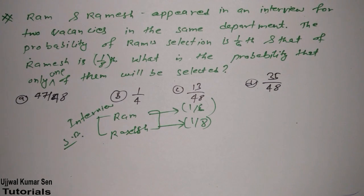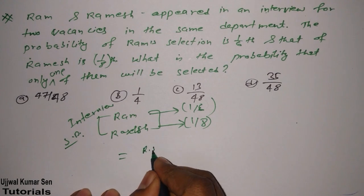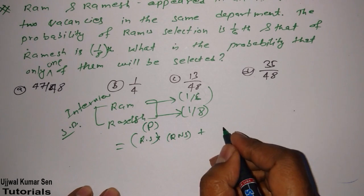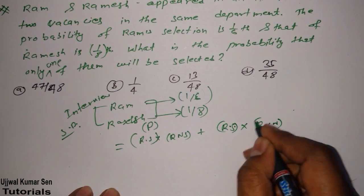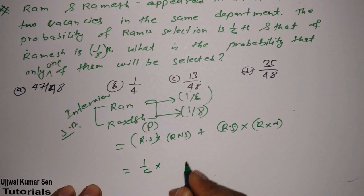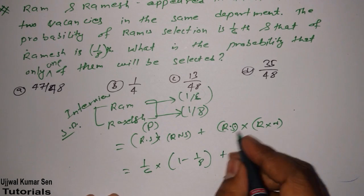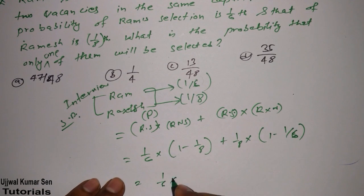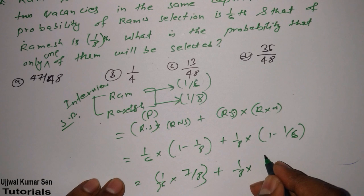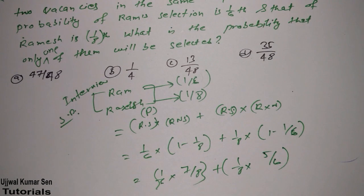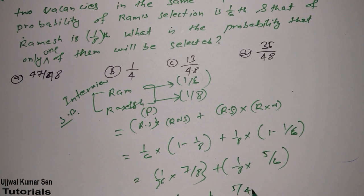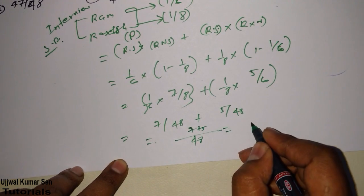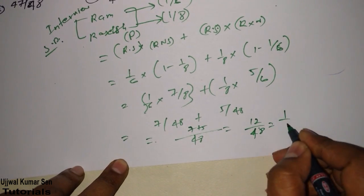Now, so what we have for these. Ram selection multiple Ramesh not selected plus probability Ramesh selected multiple Ram is not selected. If Ram selected one by six, Ramesh one minus one by eight, because not selected. And if Ramesh selected one by eight, Ram is not selected. That means one minus one by six. So one by six, seven by eight, plus one by eight, five by six. Now this becomes seven by 48 plus five by 48. And this will become what? 48 LCM, seven plus five, 12 by 48 is equal to one by four.